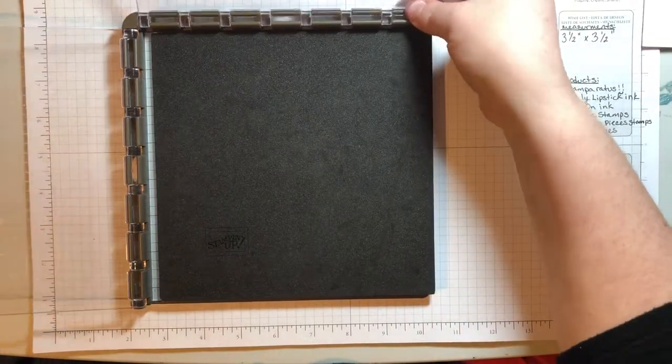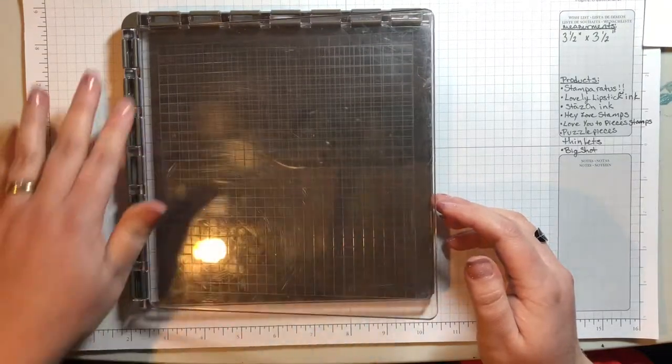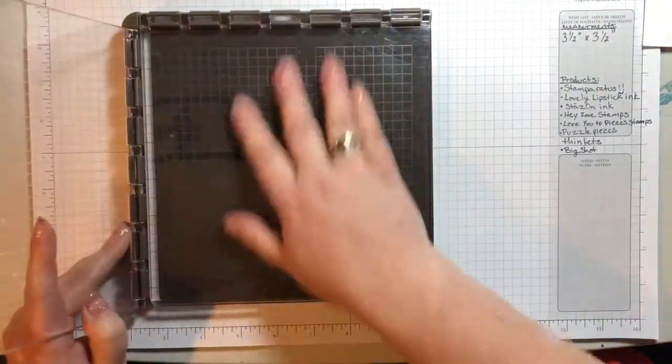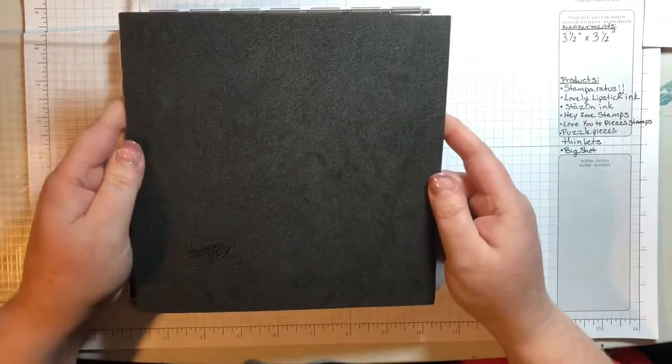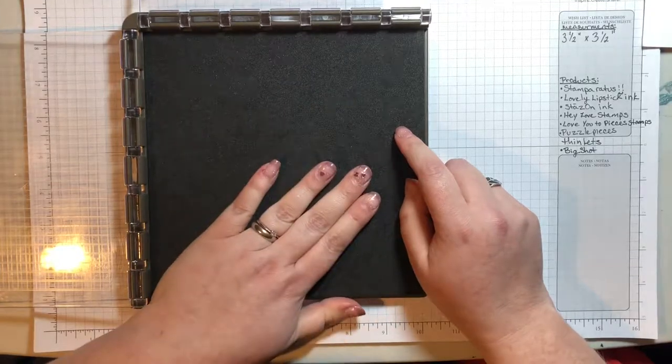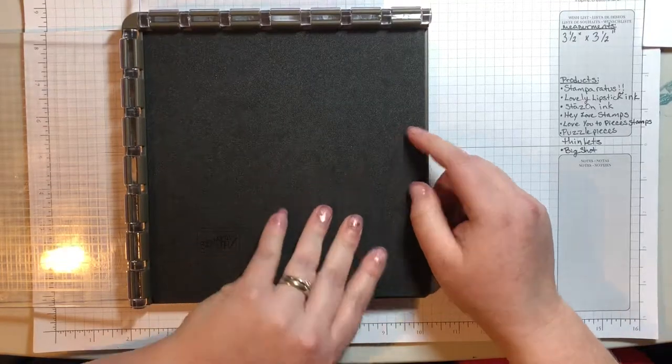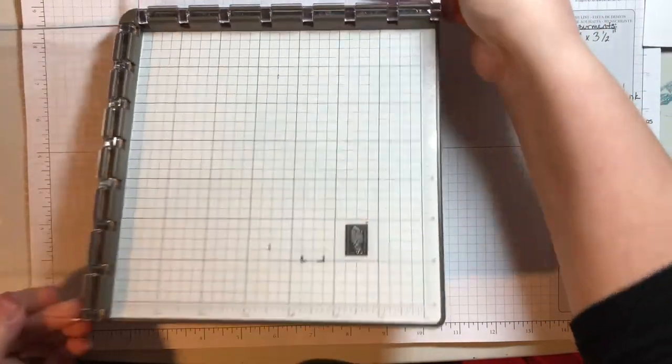When you store your Stamparatus, you don't want to store them with the two plates on it, because it doesn't go down all the way and you could snap your plate here or this plate here. You also get the foam mat that you would use for placement and stability when stamping with your photopolymer stamps. So I'm going to be using red rubber stamps. I won't need that today.